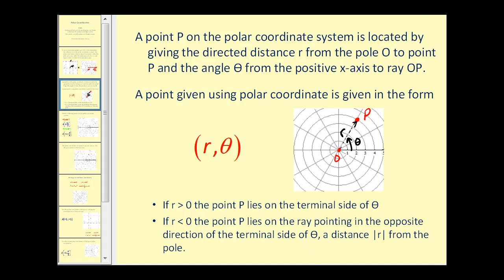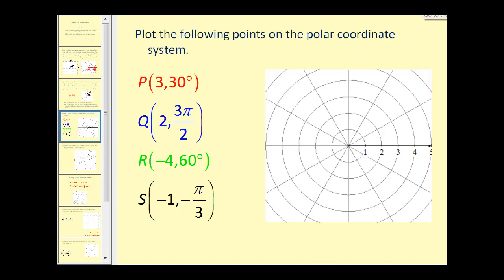Let's take a look at how this works. To plot the point (3, 3°), we go out three units on the polar axis and then rotate three degrees for point P. Here is the ray, here is our angle theta, and the point is three units from the pole.